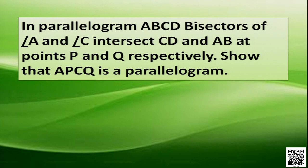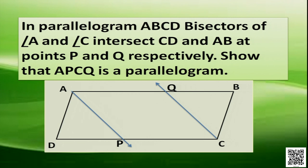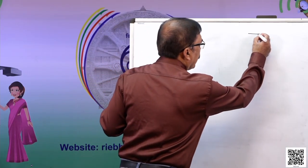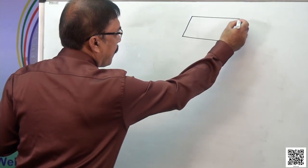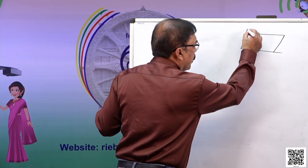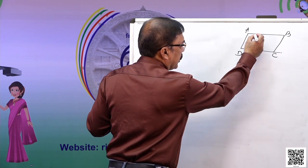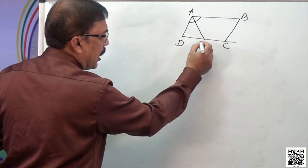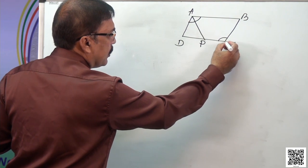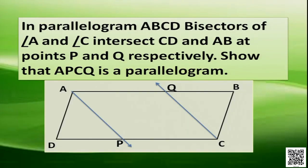Here is a question: In parallelogram ABCD, bisectors of angle A and angle C intersect CD and AB at points P and Q respectively. The figure has points A, P, C, Q. We have to show that quadrilateral APCQ is a parallelogram. Given: in parallelogram ABCD, bisector of angle A intersects DC at P, and bisector of angle C intersects AB at Q.